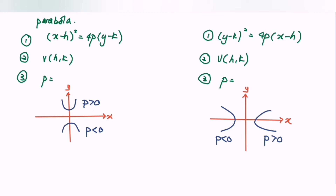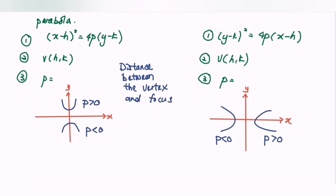Another important piece of information: the value of p refers to the distance between the vertex and the focus. Another function of the value of p is the distance between the vertex and the directrix.